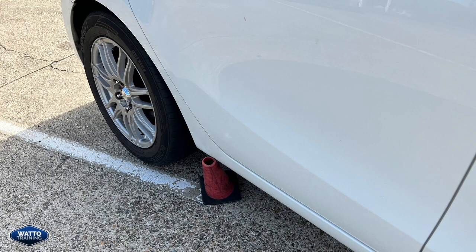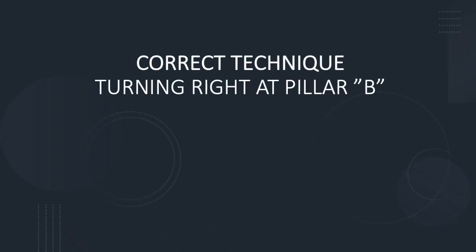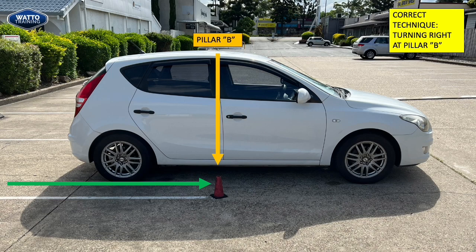So we know that turning at the front tire or turning at Pillar A is too early. We need to push back our reference point for when to turn a little bit further along the vehicle. The recommended reference point for the correct technique when turning right out of a car park is to turn at the B pillar, which is just to the right shoulder of the driver. The green arrow shows the driver would move forward and once the Pillar B reference point is met, the driver would start to turn the steering wheel to the right to leave the parking bay.